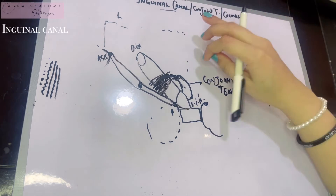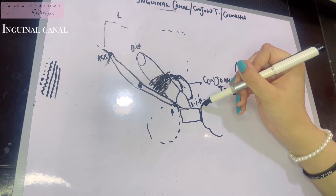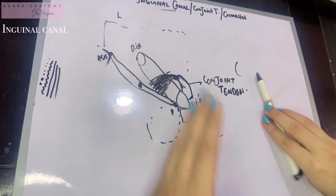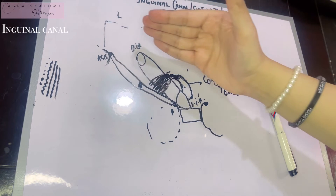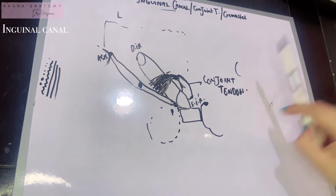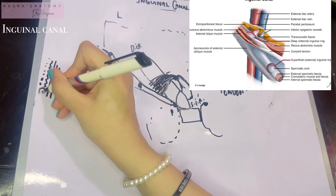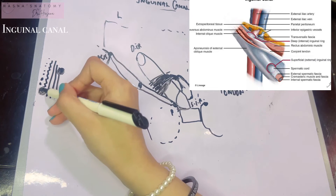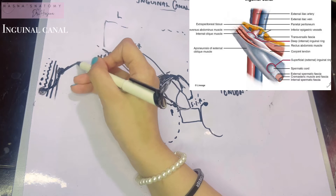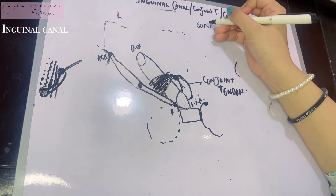The inguinal canal is an oblique intermuscular passage lying on the lower part of the anterior abdominal wall, between the deep inguinal ring and the superficial inguinal ring, about four centimeters in size, directed downwards, forwards, and medially. It penetrates all the muscle layers — starting at the fascia transversalis at the deep inguinal ring, traversing the transversus abdominis, internal oblique, and external oblique, all the way to the superficial inguinal ring.